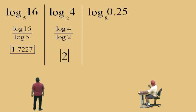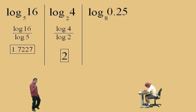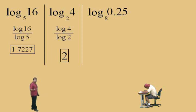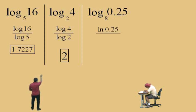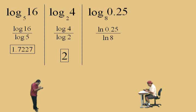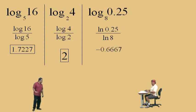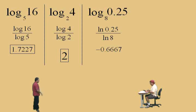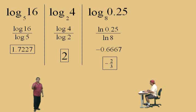Here we have log base 8 of 0.25. This one could actually be done without a calculator, but let's use the calculator. This time let's apply the change of base rule using natural log — base e. We have natural log of 0.25 divided by natural log of 8. Charlie calculates ln of 0.25 divided by ln of 8 and gets negative 0.6667. That answer is actually negative two-thirds, because 8 to the negative two-thirds is 0.25, or one-fourth.